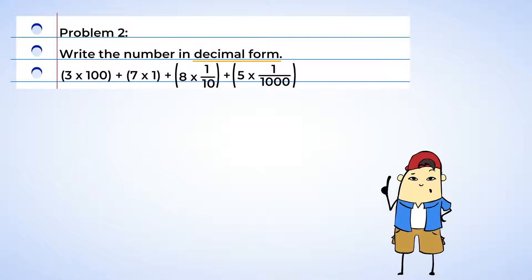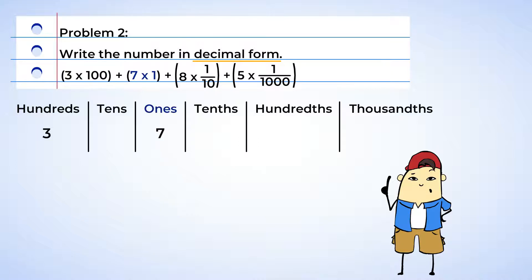Chen has a number that is written in expanded form and wants to write it as a decimal. So let's take a look together at what each digit is being multiplied by and find out what place value it is. The three is being multiplied by a hundred, and this means that it goes into the hundreds place. Seven is being multiplied by one, so that goes into the ones place. Eight is being multiplied by one tenth, so it goes into the tenths place. And the last digit, five, is being multiplied by one thousandths. So it goes into the thousandths place.